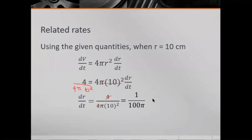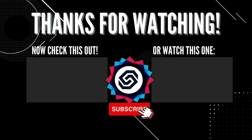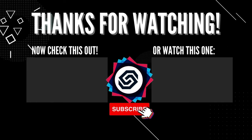Therefore, when the radius r is 10 cm, the radius is increasing at the rate of approximately 0.00318 centimeters per minute.